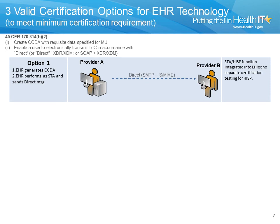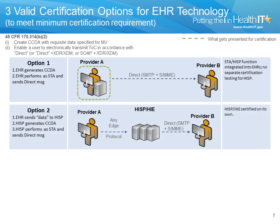The first valid certification option is what I'll call the native or integrated EHR technology option. In this option, as indicated by the box surrounding Provider A, the EHR technology is capable of both CCDA creation and transport — that is to say, the EHR technology performs the functions required of a Security and Trust Agent, or STA, under the direct specification. The second valid option is one where a Health Information Service Provider, also known as a HISP — which can be a standalone data intermediary or a component of an HIE entity — gets certified to provide both CCDA creation and transport capabilities in accordance with DIRECT. Under this option, as indicated by the box surrounding the HISP/HIE entity, it would likely be certified as a standalone EHR technology, which ONC's regulation defines as a capital-M EHR module.